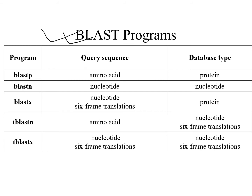Now for a very important slide — BLAST programs, their query sequences, and database types. The programs include BLASTP, BLASTN, BLASTX, TBLASTN, and TBLASTX. BLASTN uses nucleotide query sequences and searches a nucleotide database. BLASTP uses amino acid queries against a protein database. BLASTX uses nucleotide six-frame translations as query against a protein database.